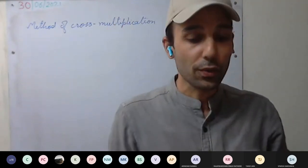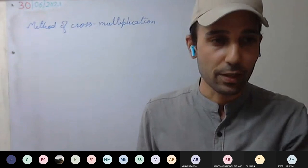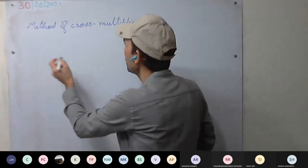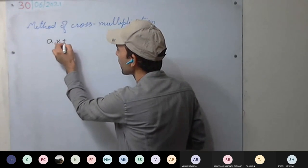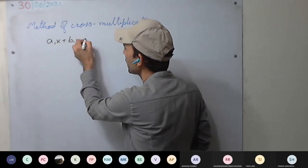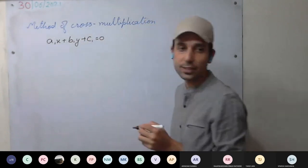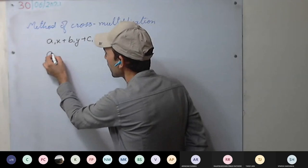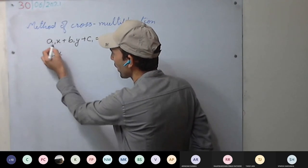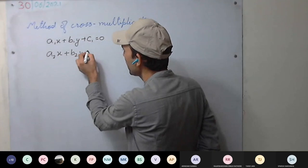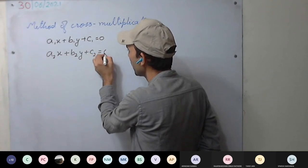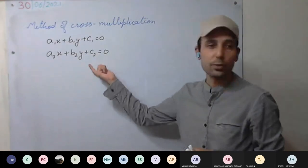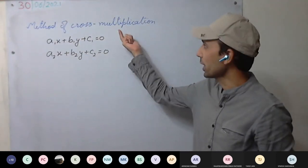First we will be writing the equation in standard form. The standard form of an equation is a1x plus b1y plus c1 equal to 0. This is our first equation, and the second equation will be a2x plus b2y plus c2 equal to 0. These are the two equations we need to solve using the method of cross multiplication.